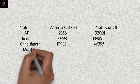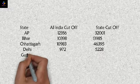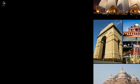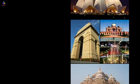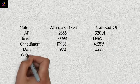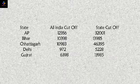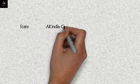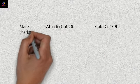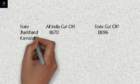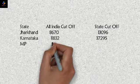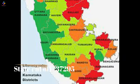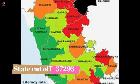In Delhi, the all India cutoff was 972 whereas the state cutoff was 5228. Gujarat cutoff was 6398 whereas the state cutoff was 13985. Jharkhand had all India cutoff 8670 whereas the state cutoff was 13096. Karnataka had all India cutoff 11832 whereas state cutoff was 37295.